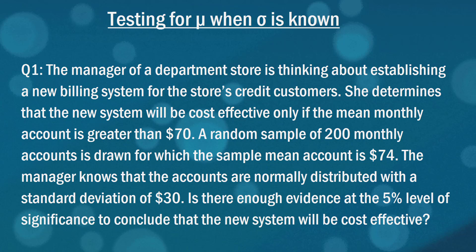It's a classic hypothesis testing scenario. So let's give it a read. The manager of a department store is thinking about establishing a new billing system for the store's credit customers. She determines that the new system will be cost effective only if the mean monthly account is greater than $70. And so we've got a random sample here of 200 accounts with a mean value of $74. And we're also given this sneaky piece of information saying somehow the manager knows that the accounts are normally distributed with a standard deviation of $30. Now in reality, it's unlikely to know the true population standard deviation. But in introducing the concept of hypothesis testing, we start by making all these simplifying assumptions, and we're going to relax them a little bit later. The question is, is there enough evidence at the 5% level of significance to conclude that the new system will be cost effective?